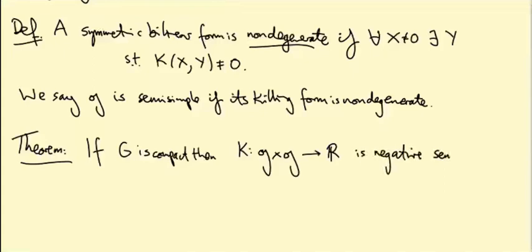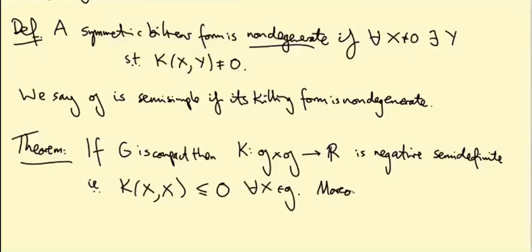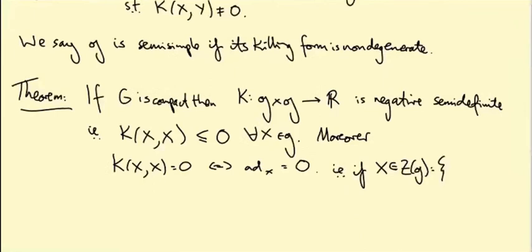What does that mean? It means K(x,x) is less than or equal to zero for all x in the Lie algebra. And in fact, K(x,x) equals zero if and only if ad_x is zero. So in other words, if x commutes with everything in the Lie algebra. So if, in other words, if x lives in what's called the center of the Lie algebra, that's the set of x such that x bracket y equals zero for all y in the Lie algebra.